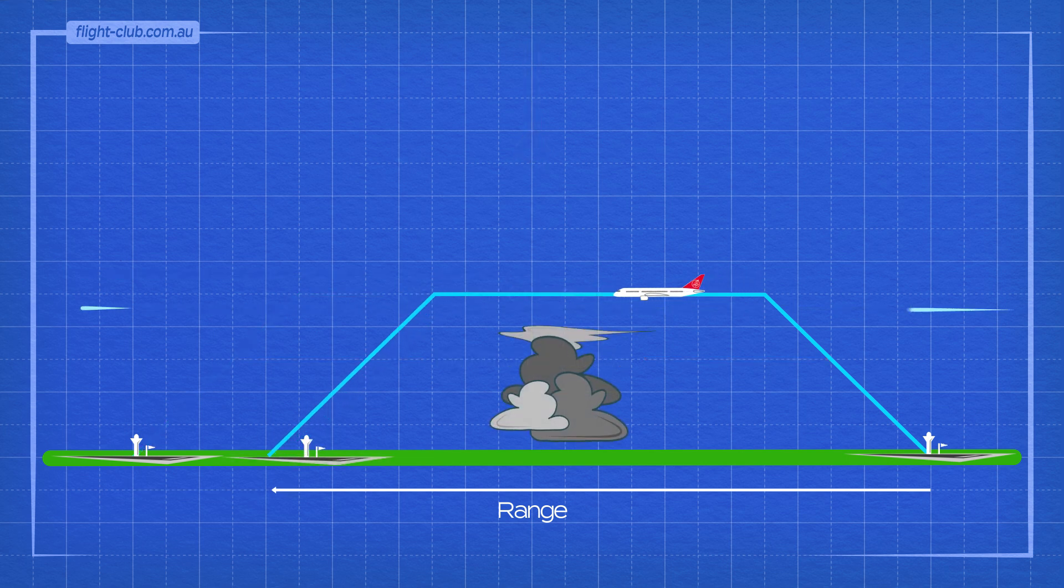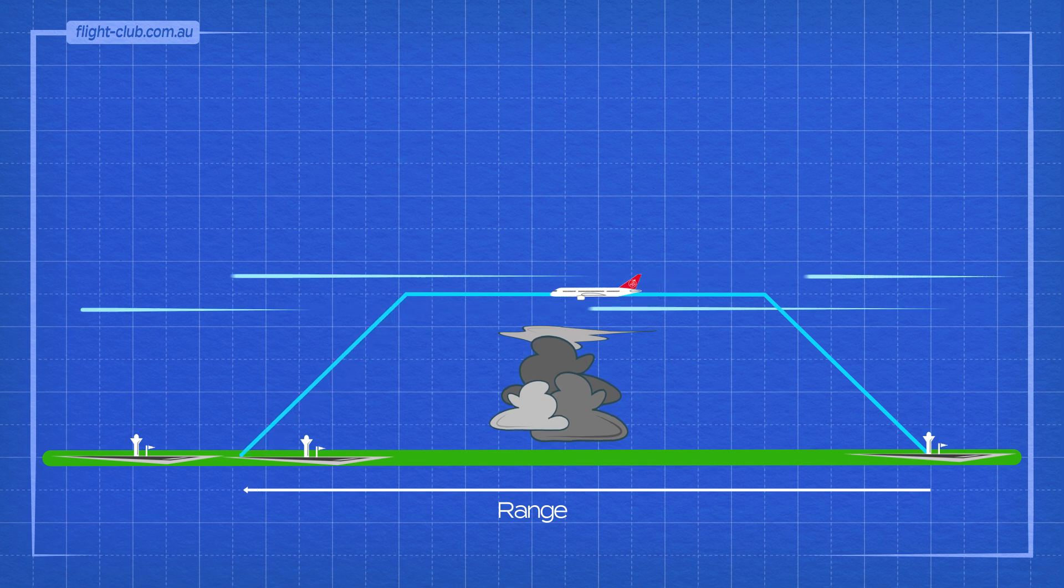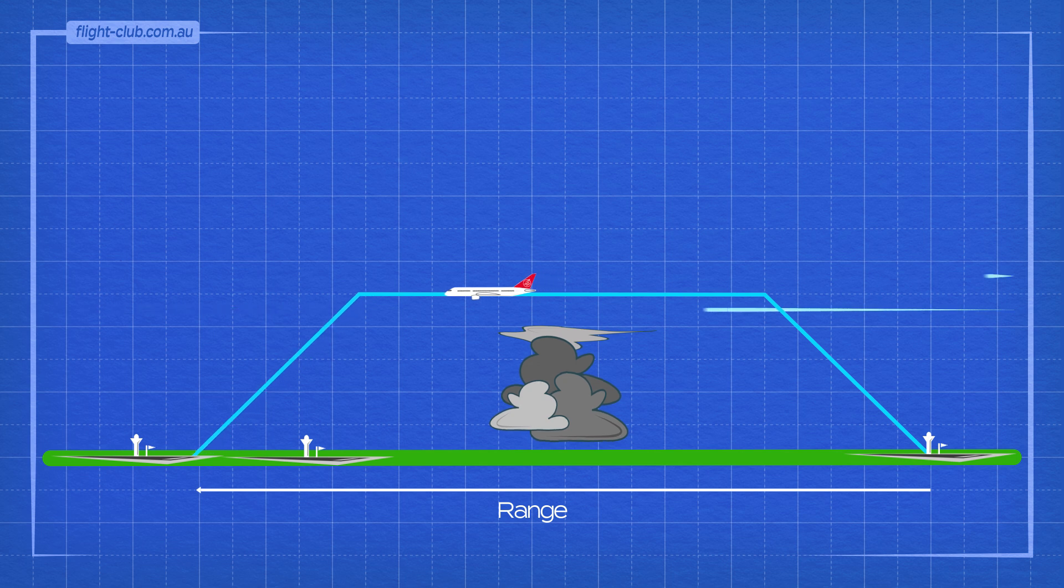Utilizing jet streams and avoiding turbulence at the optimum cruise altitude may also improve the aeroplane's maximum range.